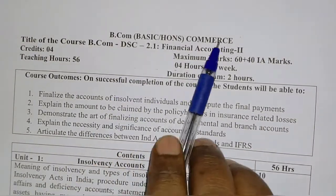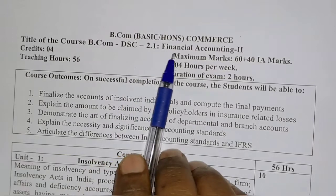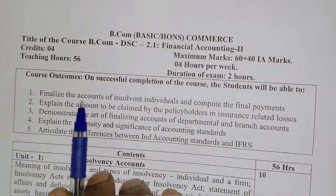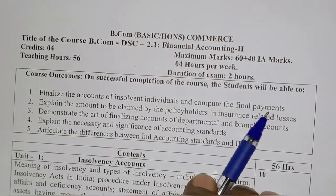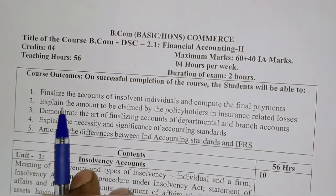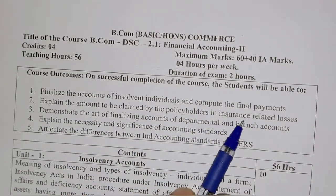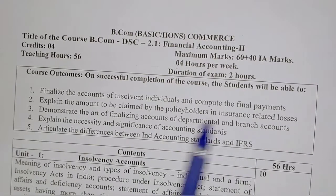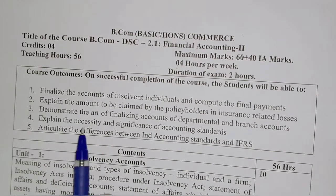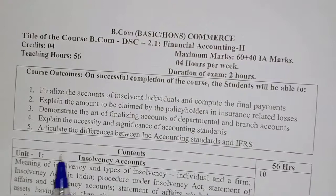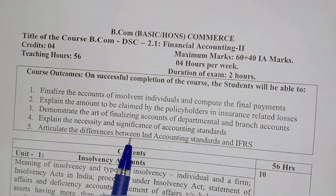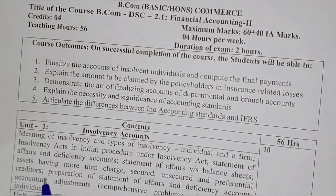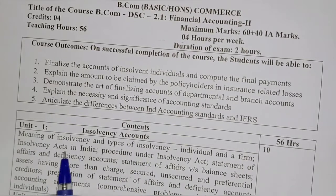Welcome to the second semester NEP batch DSC paper 2.1, Financial Accounting. The course outcomes of this paper are: finalizing the accounts of insolvent individuals and computing the final payments; explaining the amount to be claimed by policyholders in insurance-related losses; demonstrating the art of finalizing departmental and branch accounts; and articulating the differences between Indian Accounting Standards and IFRS.